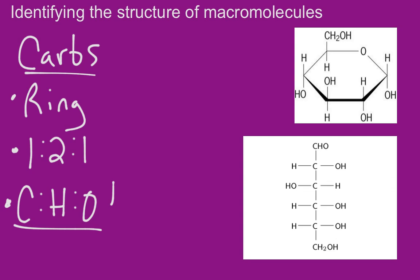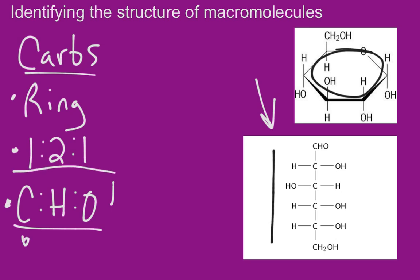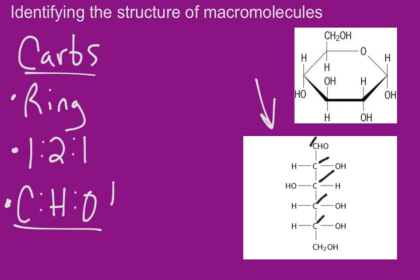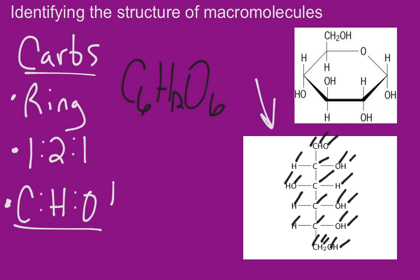Next we're going to look at the same molecule on the bottom — this is also glucose but in the linear form, meaning instead of being in a ring it's in a line. You might get this confused with a lipid, but if you count you will see a one-to-two-to-one ratio of carbon to hydrogen to oxygen. We have six carbons (C6), six oxygens (O6), and twelve hydrogens (H12), so for every one carbon we have twice as many hydrogens and the same number of oxygens.